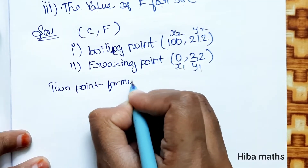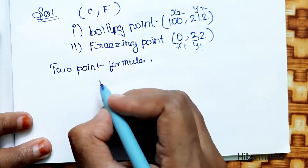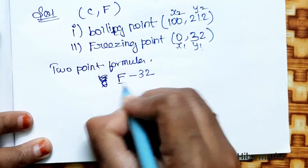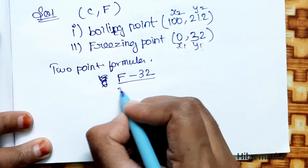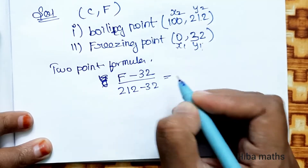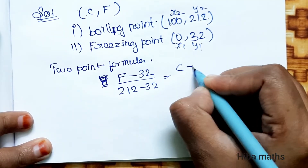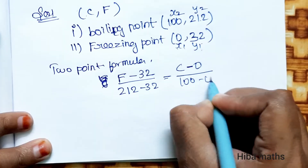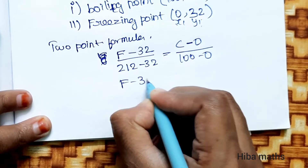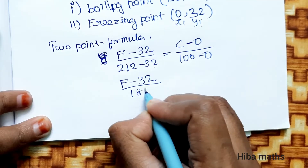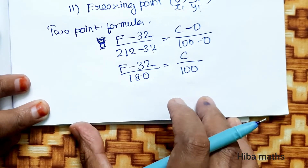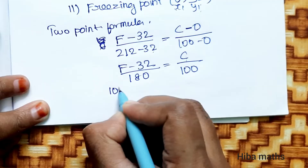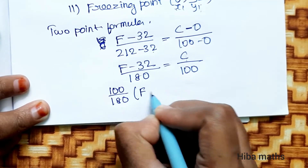Using the two-point formula: (y - y1) / (y2 - y1) = (x - x1) / (x2 - x1). Substituting y as F and x as C: (F - 32) / (212 - 32) = (C - 0) / (100 - 0). So (F - 32) / 180 = C / 100. Therefore C = (100 / 180) × (F - 32), which simplifies to C = (5/9) × (F - 32).